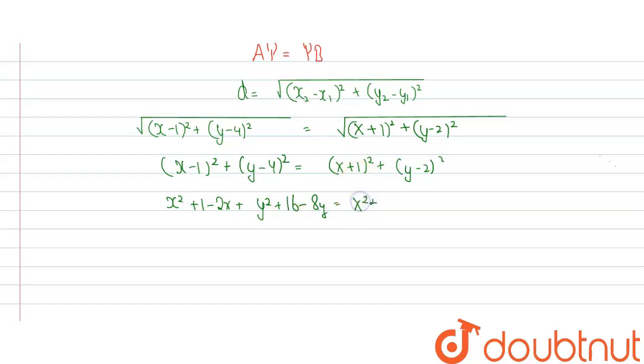x plus 1 whole square will be x square plus 1 plus 2x and y minus 2 whole square will be y square plus 4 minus 4y.